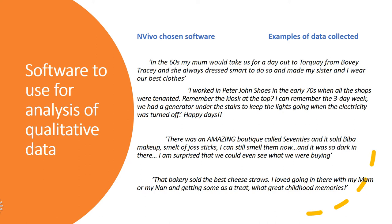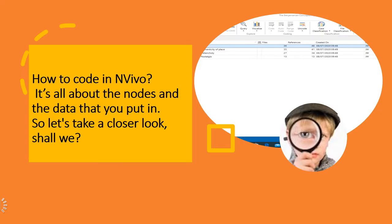For example: 'There was an amazing boutique called 70s and it sold Biba makeup — the smell of joss sticks, I can still smell them now. It was so dark in there, I'm surprised that we could even see what we were buying.' And: 'That bakery sold the best cheese straws. I loved going in there with my mum or my nan and getting some as a treat — what great childhood memories!'